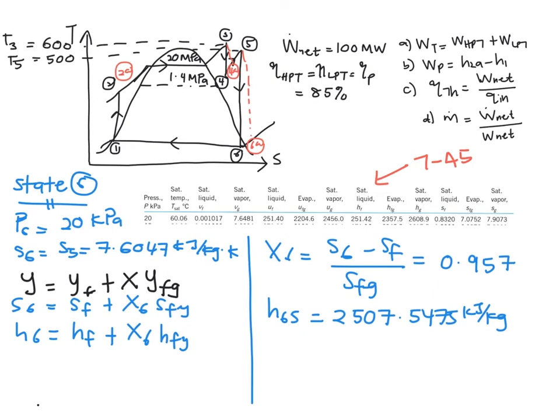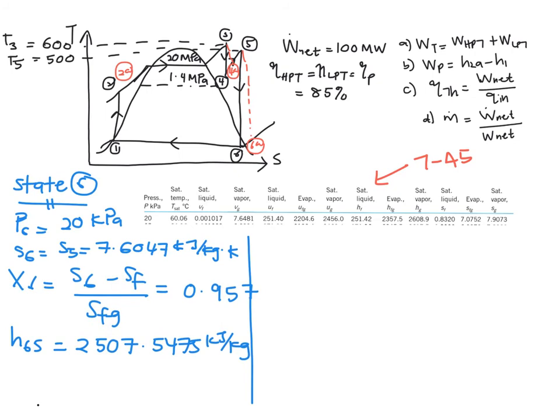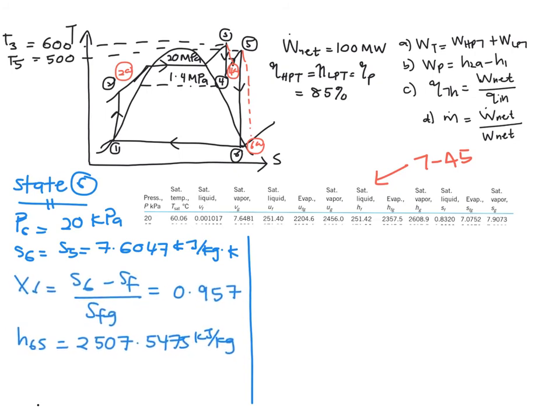Now that you have obtained your isentropic value, you will need your actual value. By using the isentropic efficiency of your low pressure turbine, the definition of your LPT is equal to actual work divided by isentropic.